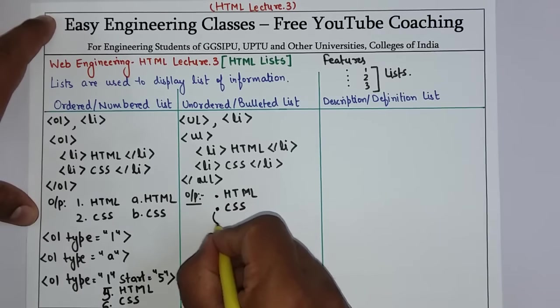This bullet is a marker. We can change this marker. For example, you can use UL type equals 'square', and the bullet will appear as a small square.